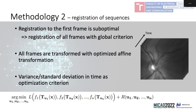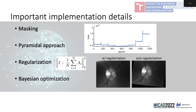As an optimization criterion, we can use, for example, variance over time or any criterion. The approach has the advantage that we can use standard tricks during registration, such as masking or a pyramidal approach. The main advantage is using regularization with a custom regularization form. The last advantage is bio-optimization, because we can use this optimization for finding the optimal hyperparameters of registration techniques.